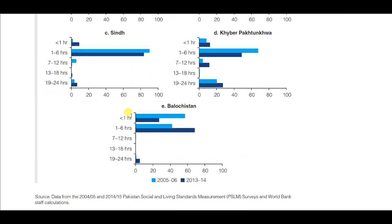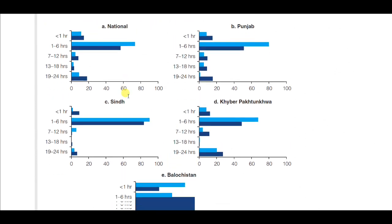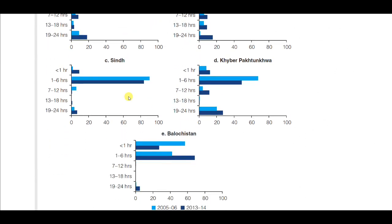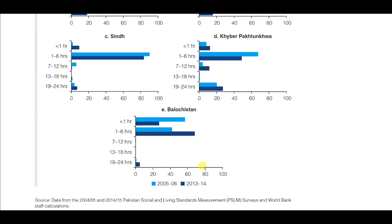These figures are taken from HIAS — so even though one source says 2004-05 and 2014-15 from PSLM, that is incorrect because this data is not available in PSLM; it's available in HIAS. That's why you see 2005-06 and 2013-14. As a side note, even organizations like the World Bank make these kinds of mistakes, so don't be surprised.